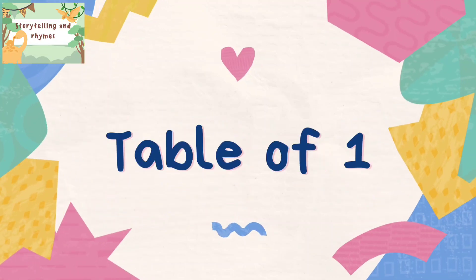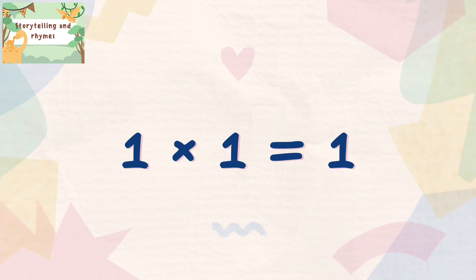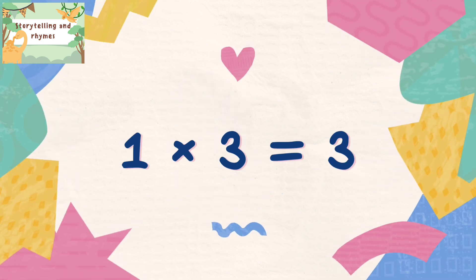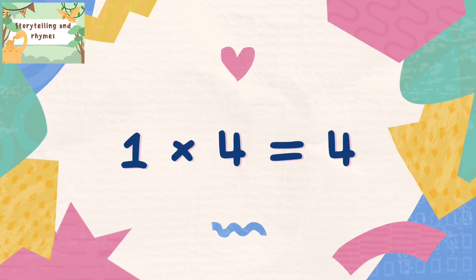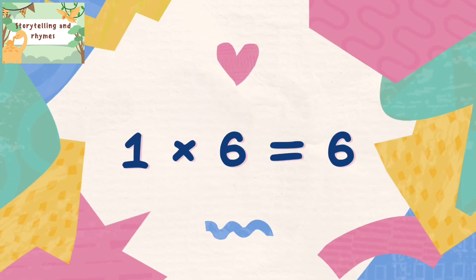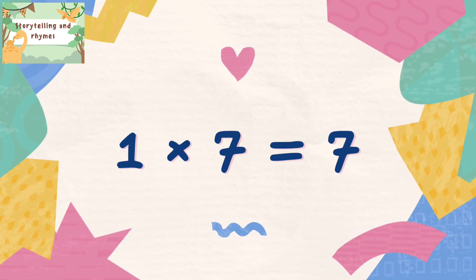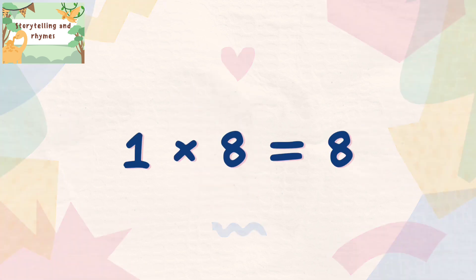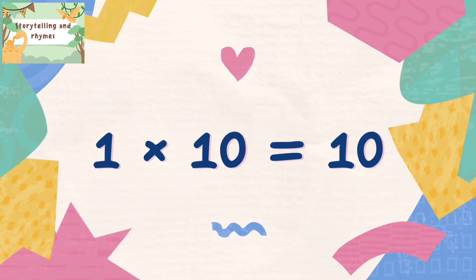Table of 1: 1 one is 1, 1 two's are 2, 1 three's are 3, 1 four's are 4, 1 five's are 5, 1 six's are 6, 1 seven's are 7, 1 eight's are 8, 1 nine's are 9, 1 ten's are 10.